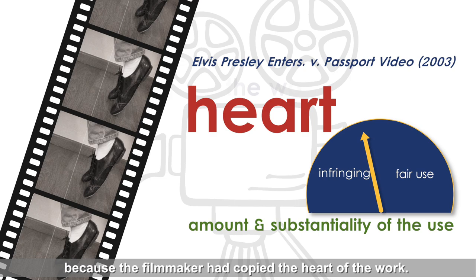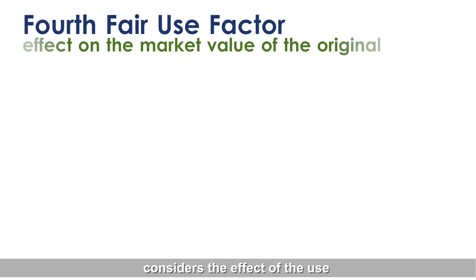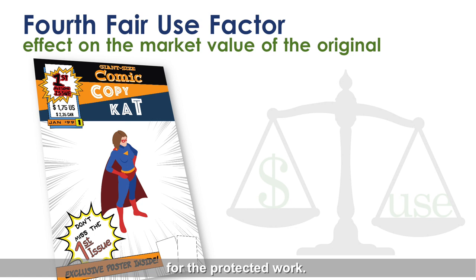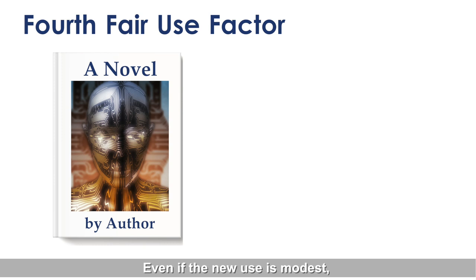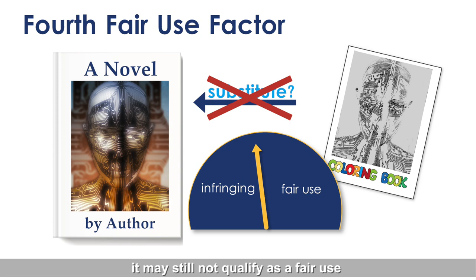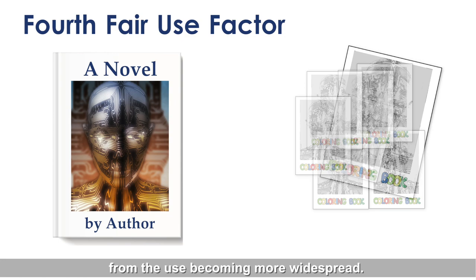The fourth fair use factor considers the effect of the use on the actual and potential markets for the protected work. Primarily, if a new use is seen as a substitute for the original work, this will disfavor a finding of fair use under the fourth factor. Even if the new use is modest and not itself harmful to the market for the protected work, it may still not qualify as a fair use if a court finds that harm is likely to result from the use becoming more widespread.